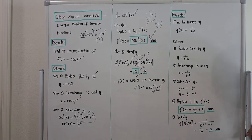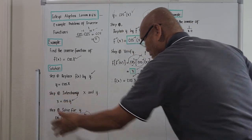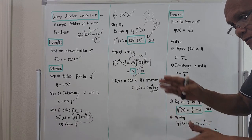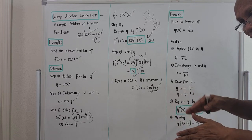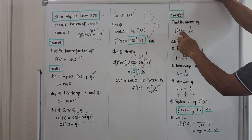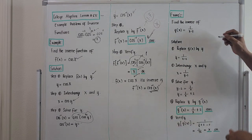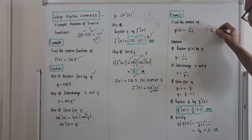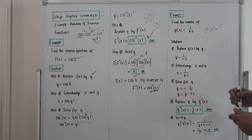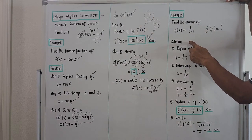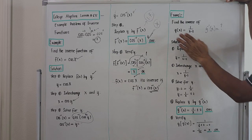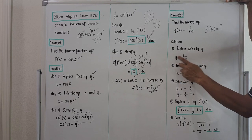Example number two for this morning. I will give you an example problem that is simple to understand. If you know the concept on the simpler one, for the complicated one it's the same — just an algebraic manipulation. Example number two: find the inverse function of g of x equals one over x minus two. The problem is asking for g to the negative one of x, the inverse function. Step one: replace g of x by y, so y equals one over x minus two.